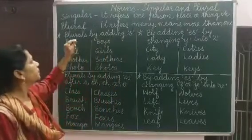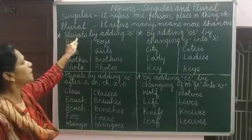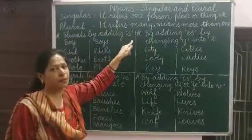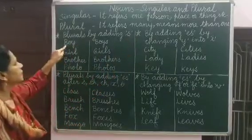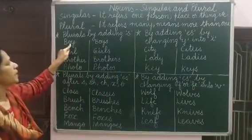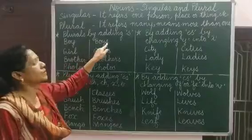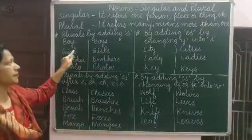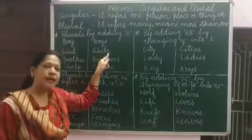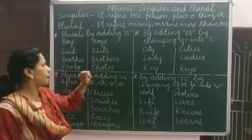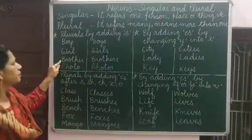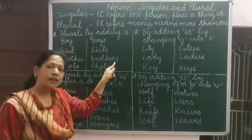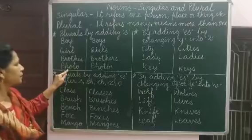First of all, we change singular into plural by adding S only. It is the simplest form. For example, boy becomes boys — we add S only to make it plural. Next is girl; again we add only S. After that, brother becomes brothers — again we add only S.